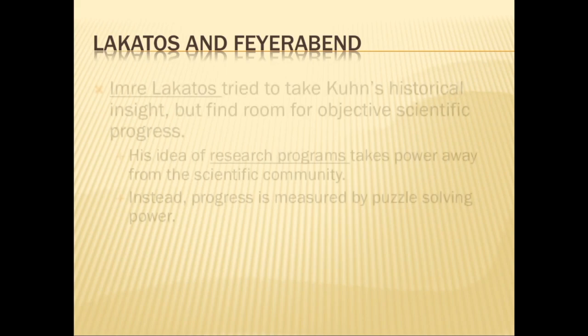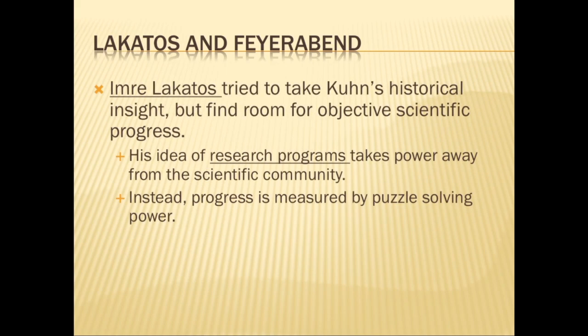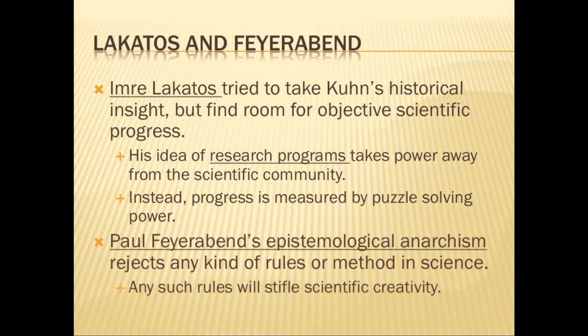After Kuhn, we saw the post-Kuhnian philosophers, starting with Imre Lakatos, who tried to fuse Kuhn's historical insights but also tried to find room for objective scientific progress. He proposed the idea of a scientific research program, which tries to take power away from the judgment of the scientific community and instead measure progress in terms of puzzle-solving power — making the research program more progressive and avoiding degeneration. Then we looked at Paul Feyerabend's epistemological anarchism, which rejected any kind of rules or method in science because any such rules would stifle scientific creativity, and science is at its best when it's being incredibly creative and insightful.